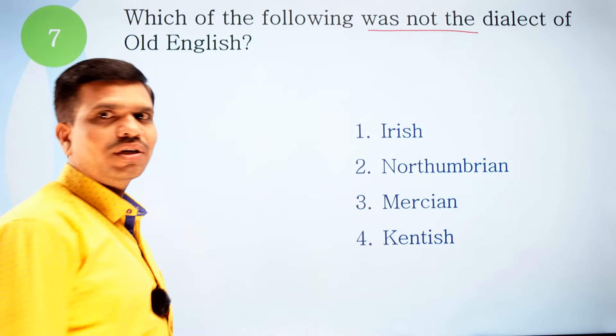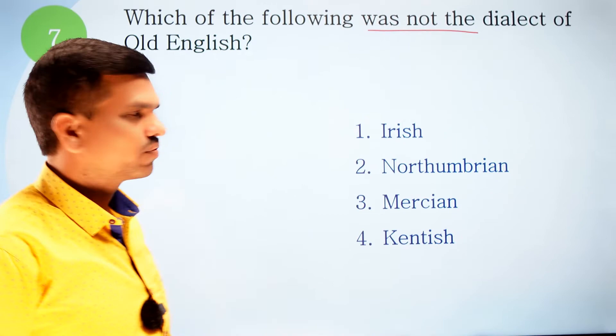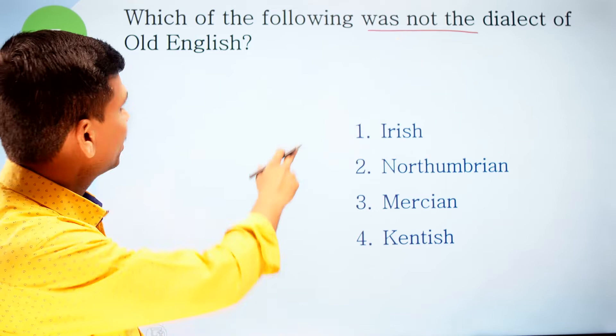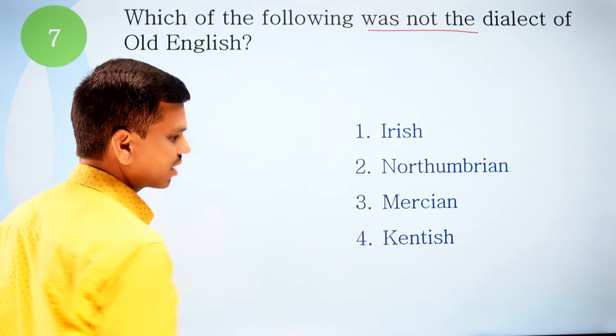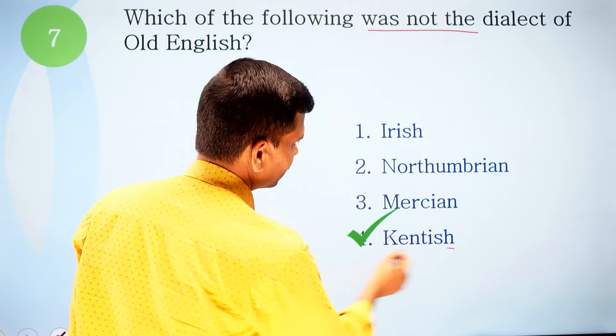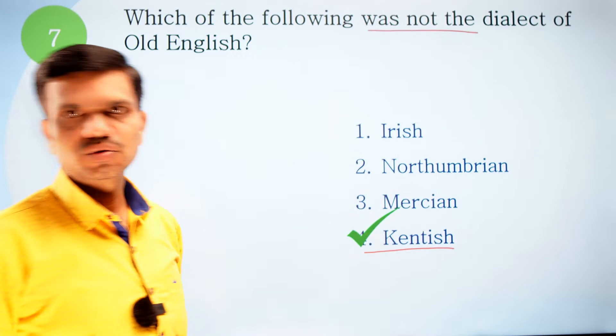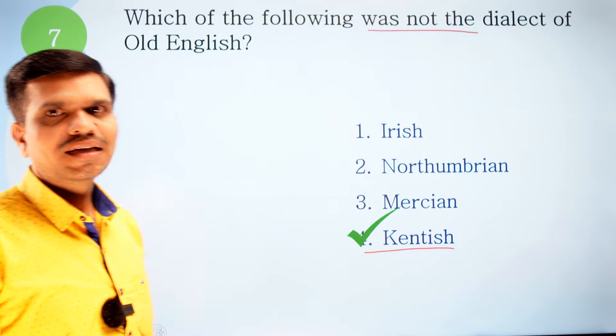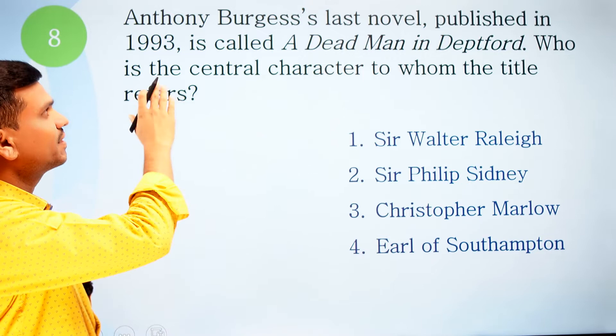Question seven: Which of the following was NOT a dialect of Old English? Read carefully — it asks which is NOT a dialect. Options: one, Irish; two, Northumbrian; three, Mercian; four, Kentish. The correct option is number one, Irish — this is not a dialect of Old English. Northumbrian, Mercian, and Kentish are all dialects of Old English. Note that different types of questions can be formed based on this information.